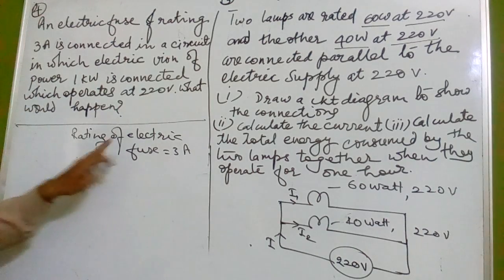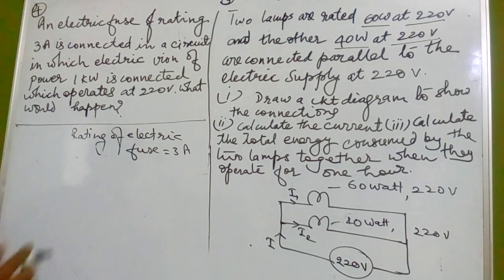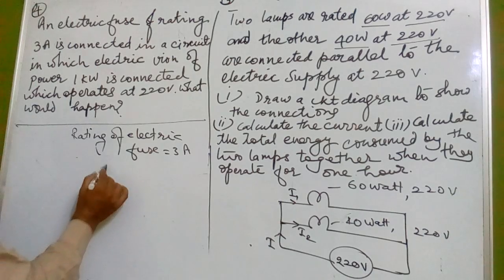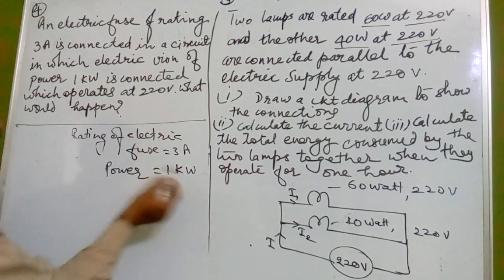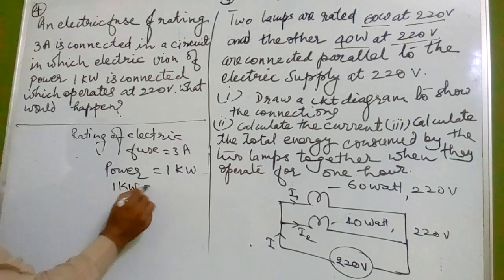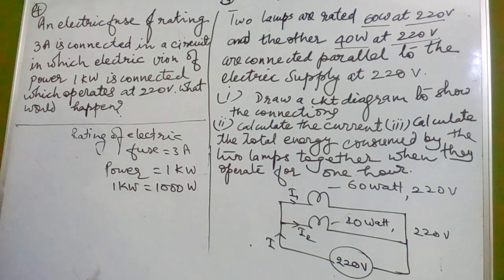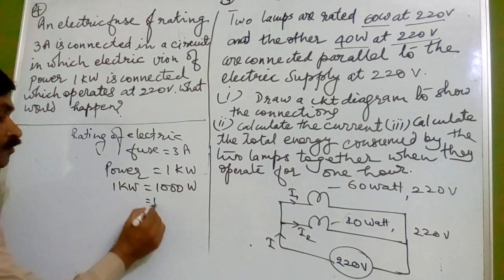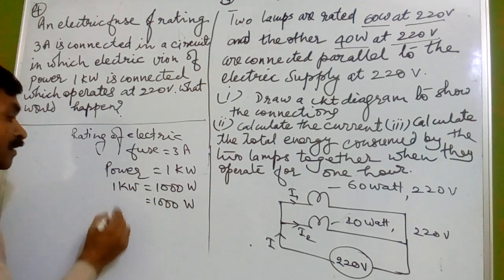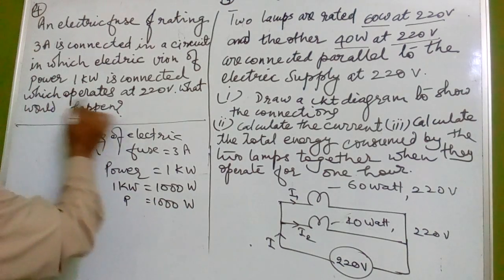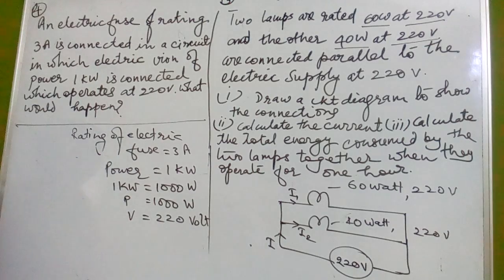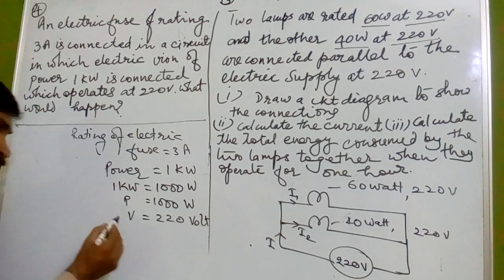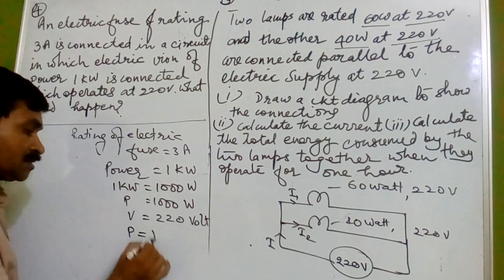The rating of the electric fuse is 3 ampere and the electric iron has a power consumption of 1 kilowatt. We convert: 1 kilowatt = 1000 watt. It operates at 220 volt, so V = 220 volt. We know the formula P = V × I.